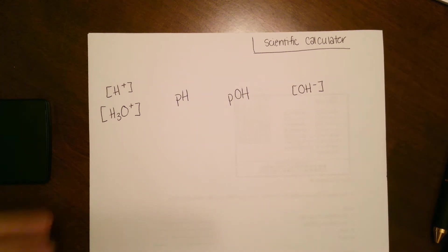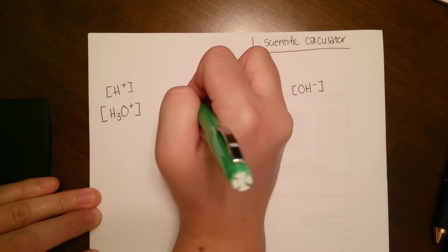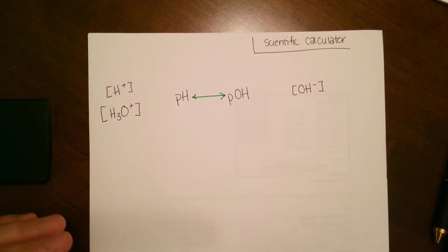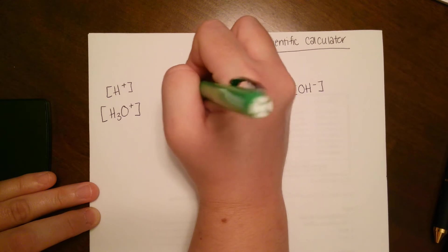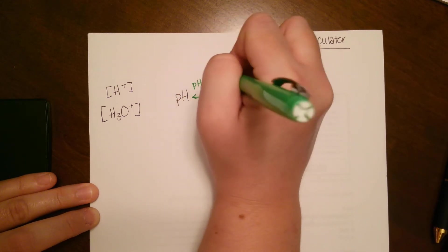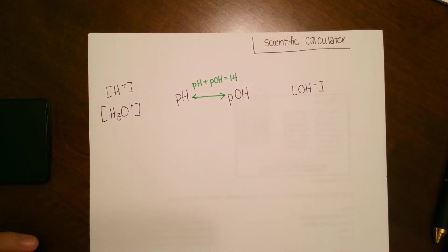Between pH and pOH you can go either direction and you're going to use the same equation no matter which direction you're going. For the conversions between those it's going to be pH + pOH = 14.